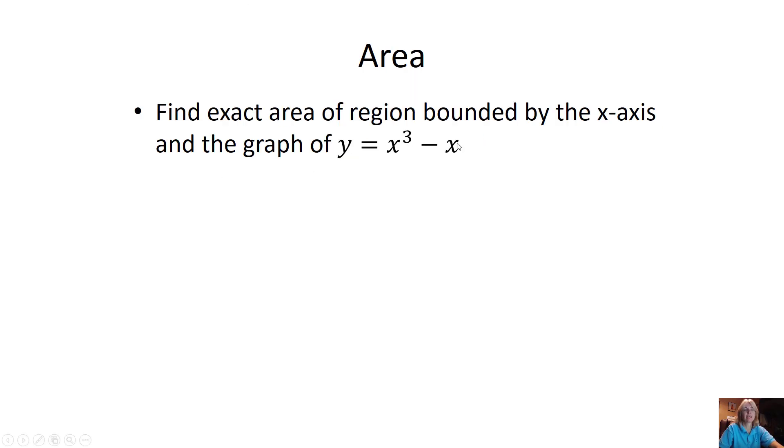Alright, so find the exact area of the region bounded by the x-axis and the graph of x cubed minus x. Well, if I'm bounded by the x-axis I probably need to see what this graph looks like, and there it is. So what I'm looking at here is I'm wanting to find this area and that area. As you can see, this is certainly going to be negative area, so we're going to have to absolute value it.